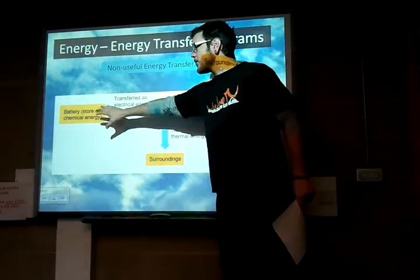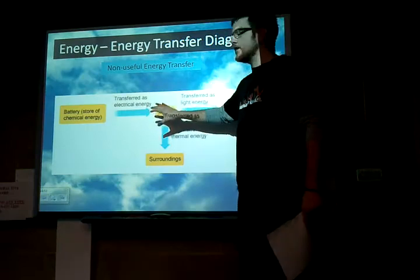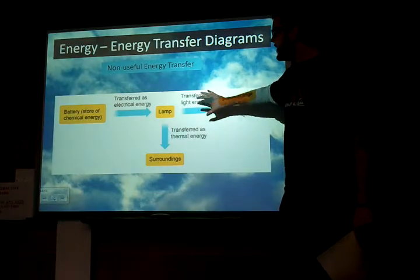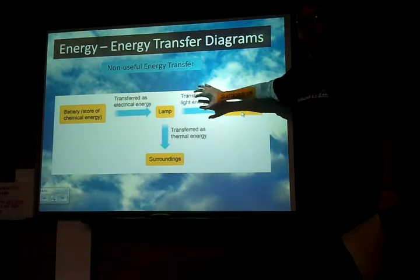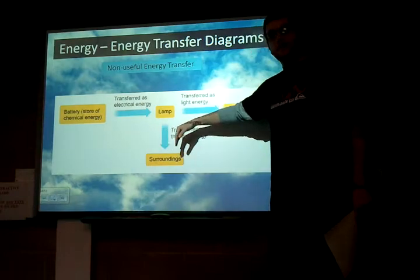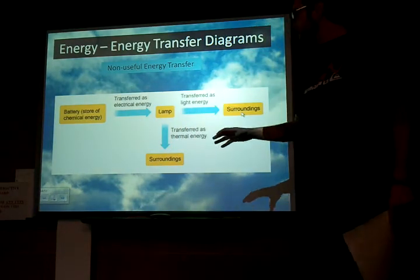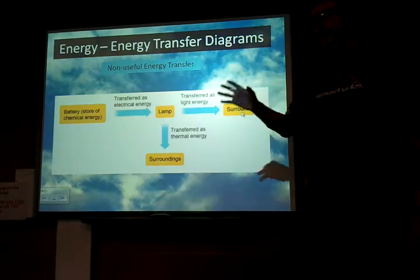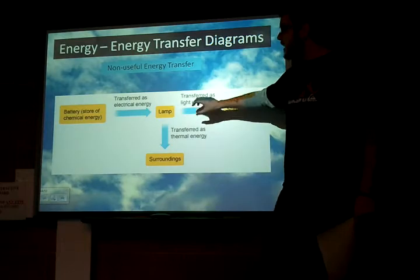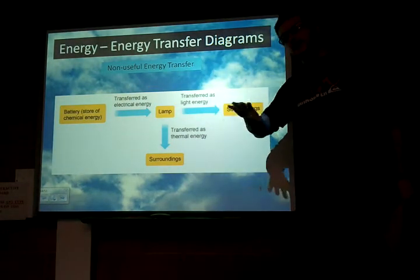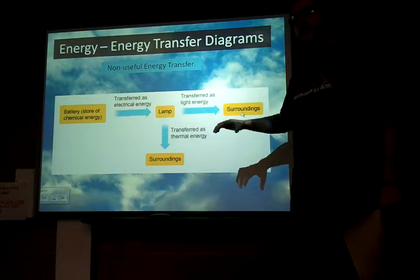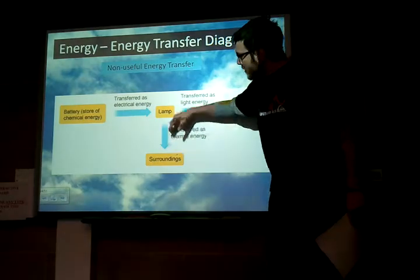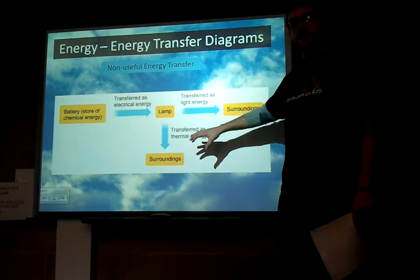Again we've got our power source from our battery being transferred into electrical energy into our lamp. Our useful transfer is being transferred into light energy — that's the stuff we want. But also in our diagram is our non-useful energy transfer, and in this case the lamp is also transferring energy into thermal energy. If you're not sure what thermal energy, light energy, or electrical energy are, go back to lesson 1 and come back here. So the thermal energy coming off is our non-useful energy transfer.